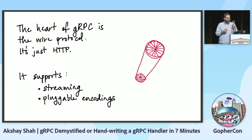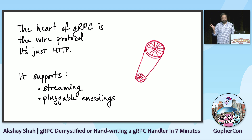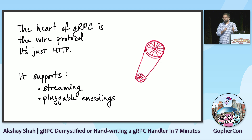As we build, we're going to keep two things in mind. gRPC is designed to support streaming of both requests and responses. And it's designed to have pluggable encodings — in particular, we want to support both protocol buffers and JSON.